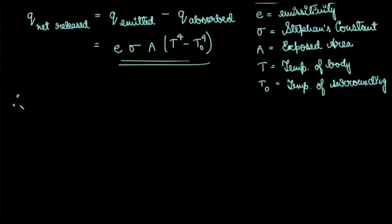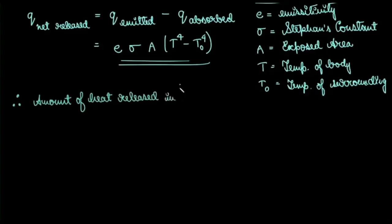The amount of heat released in a small time dt — that's a differential quantity — would be the rate of heat released multiplied by the duration of time, that is Q·dt.